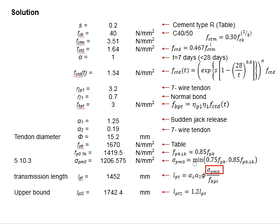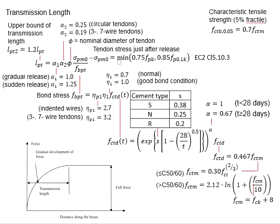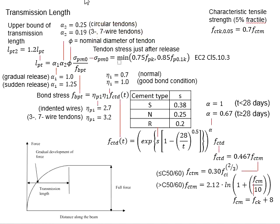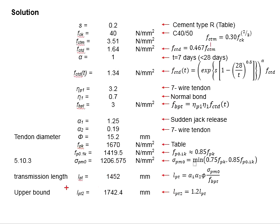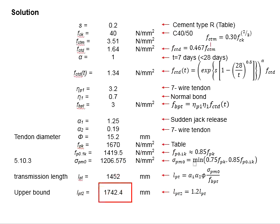Now that you have obtained the tensile stress in the tendon, there will be alpha 1, alpha 2, and also phi. Phi represents the diameter of the tendon. Alpha 1 and alpha 2 refer to the conditions of pre-stressing and the tendon. The question states that the tendon is released suddenly, therefore alpha 1 will be equal to 1.25. Since a 7-wire tendon is used, alpha 2 will be equal to 0.19. Substituting all relevant values into the equation, LPT equals 1452 mm. The upper bound of the transmission length is 1.2 times LPT, which is 1742.4 mm.